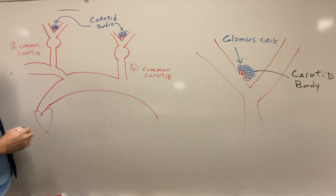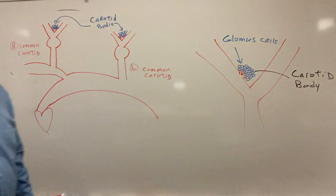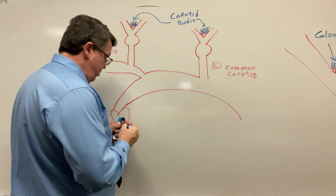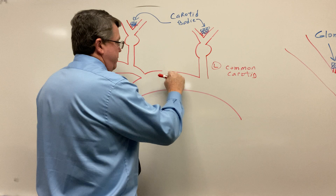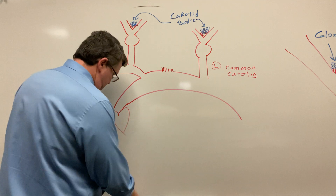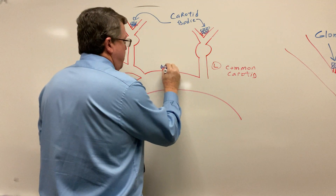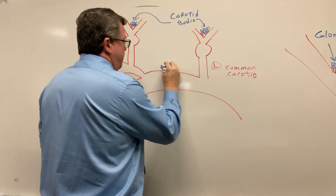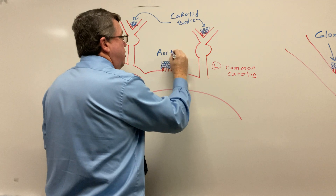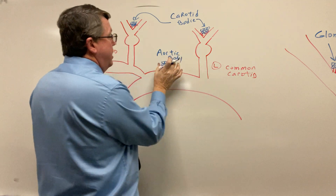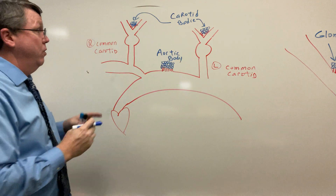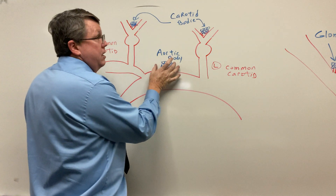Now in the aorta, I'm also going to have a body — in this case it's going to be right in here. Once again I get capillaries coming out of here and then I'm going to have glomus cells in here. This is going to be called my aortic body. So these are the chemoreceptors — the glomus cells with the capillaries make up the chemoreceptor.